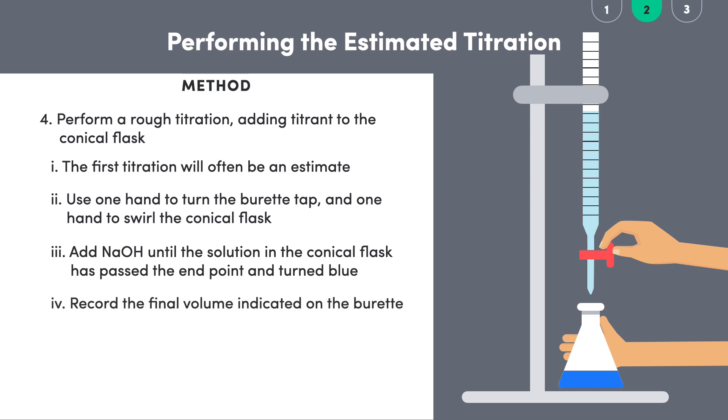We now record the final volume of sodium hydroxide indicated on the burette. We'll say this is 19.72 milliliters. We subtract the initial volume, which was 2.35 milliliters, from this final volume to get a value of 17.37 milliliters as the rough volume of titrant needed to reach the endpoint in this titration.